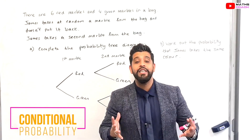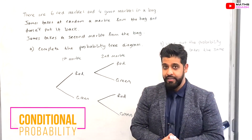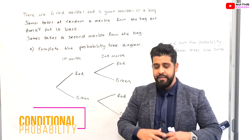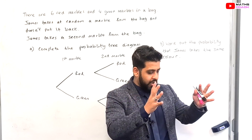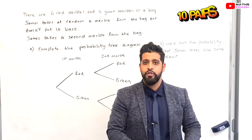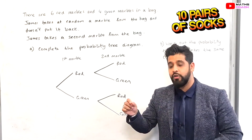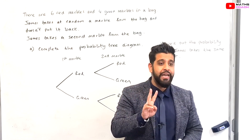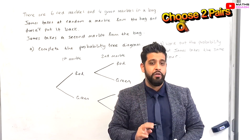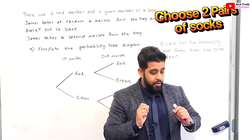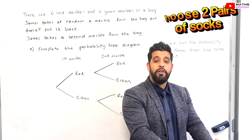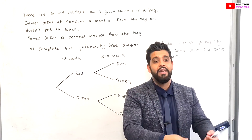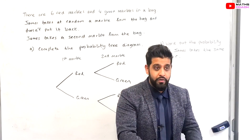So what is meant by conditional probability? I want you to imagine something. Imagine you've got a drawer full of socks and you've got 10 different pairs of socks. And you need to take two pairs of socks out. So when you go for your first pair of socks, what's the probability that you will pick a particular pair of socks?